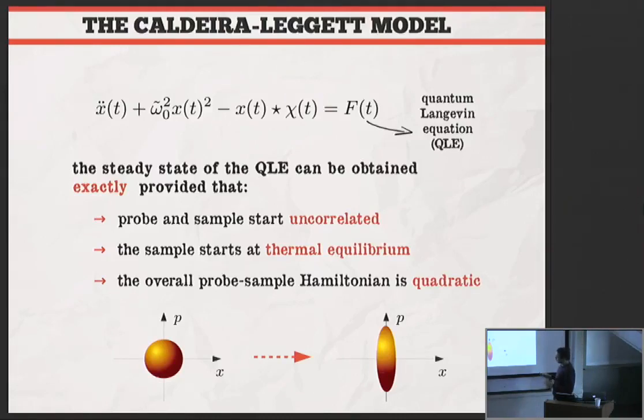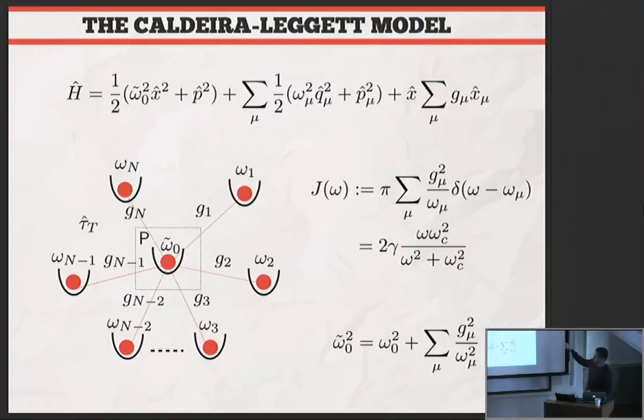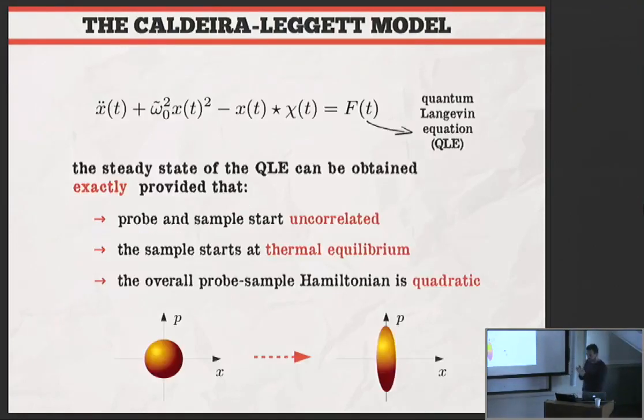You can solve this equation exactly for the steady state. The only assumptions are the probe and sample are uncorrelated initially, the sample is initially in thermal equilibrium, and because the whole Hamiltonian is quadratic, the steady state is going to be fully described by the second-order moments. If you compare the thermal equilibrium assumption, assuming the probe is in thermal equilibrium, you get some distribution in phase space. But if you solve the quantum Langevin equation when the probe and sample are strongly coupled, you will see some squeezing in the position quadrature. Why in the position quadrature? Because I'm coupling the position to the position. That strong coupling gets this reduction of the noise in the relevant quadrature.